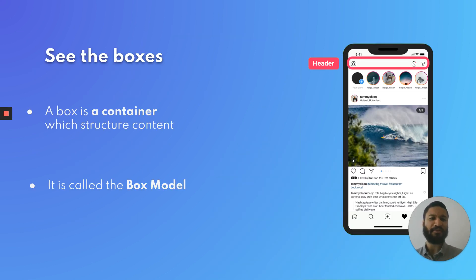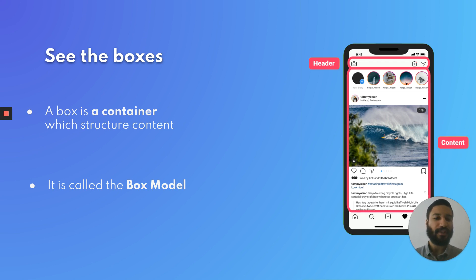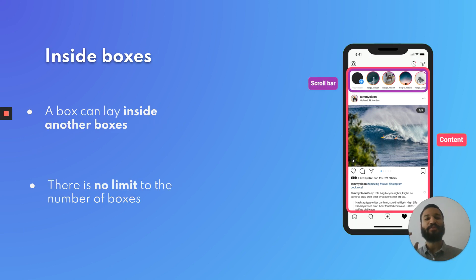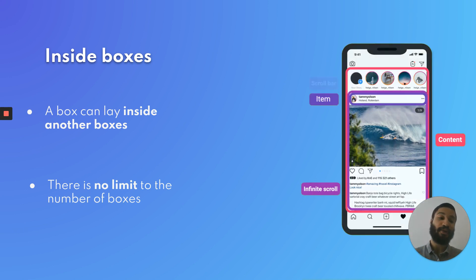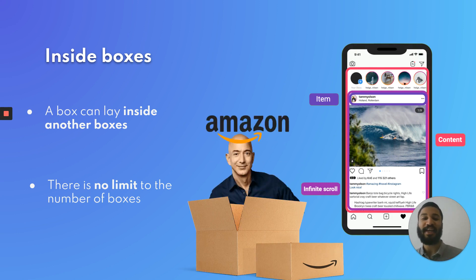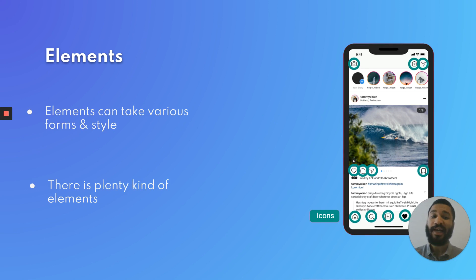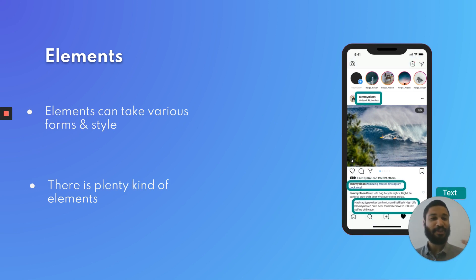We all know what the main screen of Instagram looks like — that feed. But what is it really made of? I'm going to break it down. It's boxes. A box for the top, a box for the content, a box for the tab bar. It's all boxes. A box is just a container where you put stuff in it. That's called the box model. You can put boxes inside boxes, and so on — and voila, you just spelled Amazon, but that's another tutorial. There's no limit to the boxes you can use. At the end, you just put elements inside those boxes — images, icons, or text. And just with that, we can create the whole Instagram-like feed interface.